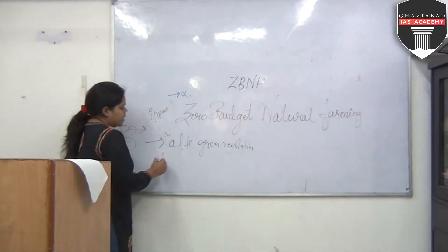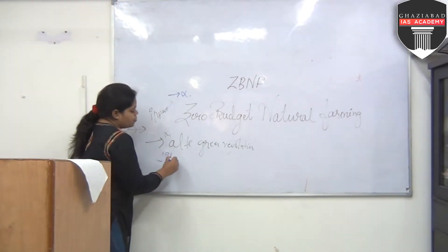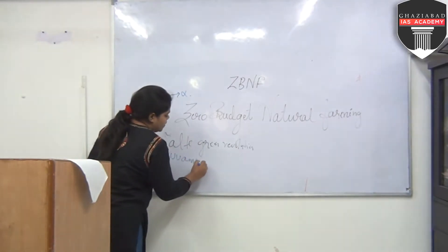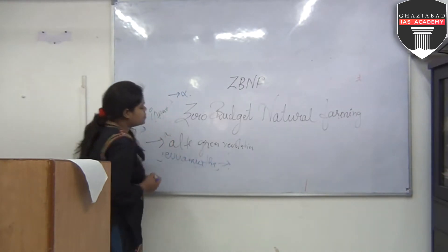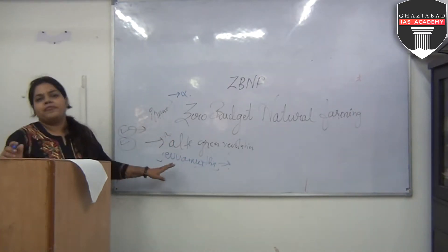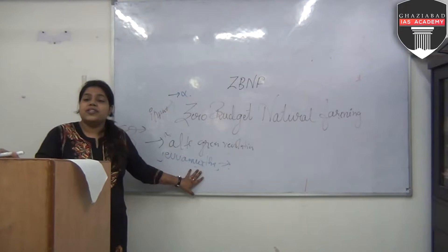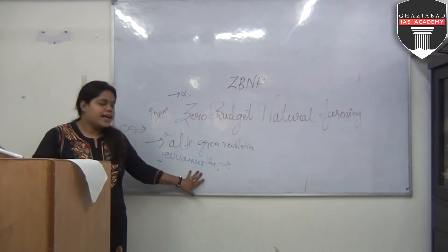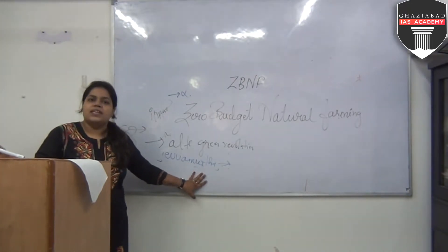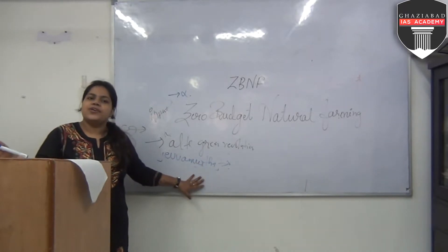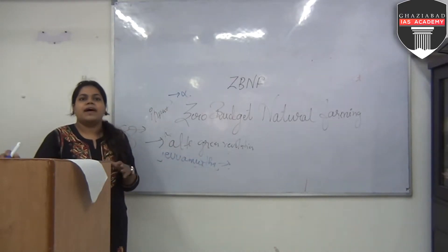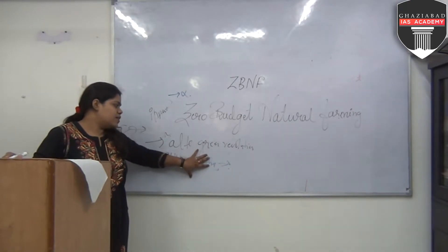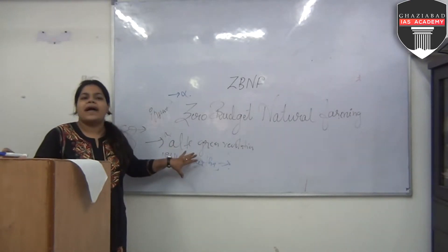Basically, they have a mixture known as Jeevamurtha. This mixture is made up of fresh cow dung, aged cow urine, flour, jaggery, soil, and water. This is the composition they are using in their fields to minimize inputs — it is a whole package.